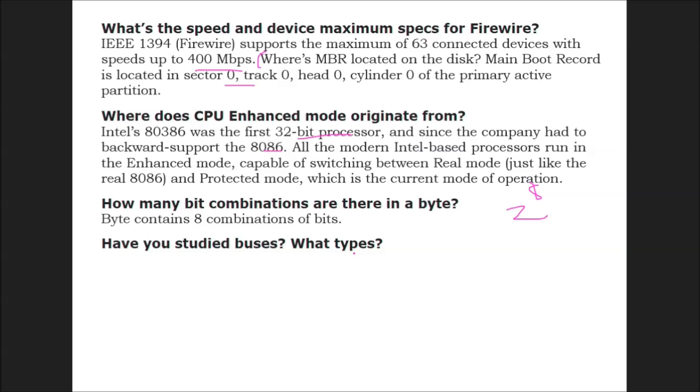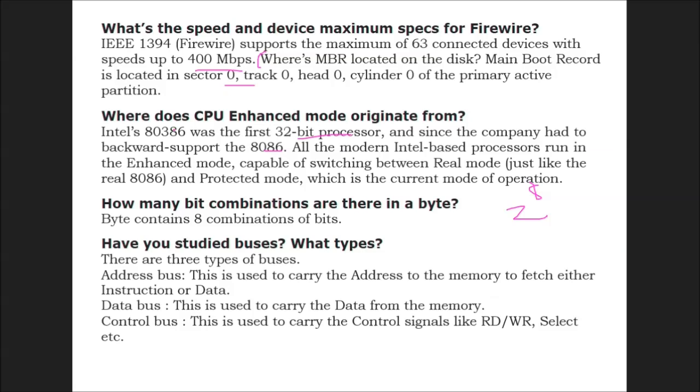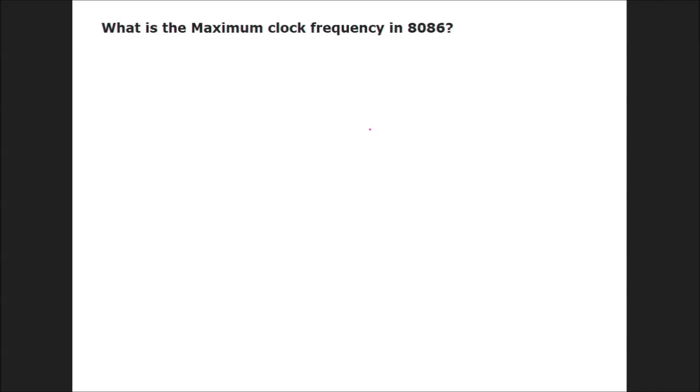Have you studied buses? What types? There are three types of buses: address bus, data bus, and control bus. Address bus is used to carry the address to the memory to fetch either instruction or data. Data bus is used to carry data from the memory. Control bus is used to carry the control signals like read/write, select, etc. What is the maximum clock speed in 8086? 5 MHz is the maximum clock frequency in 8086.